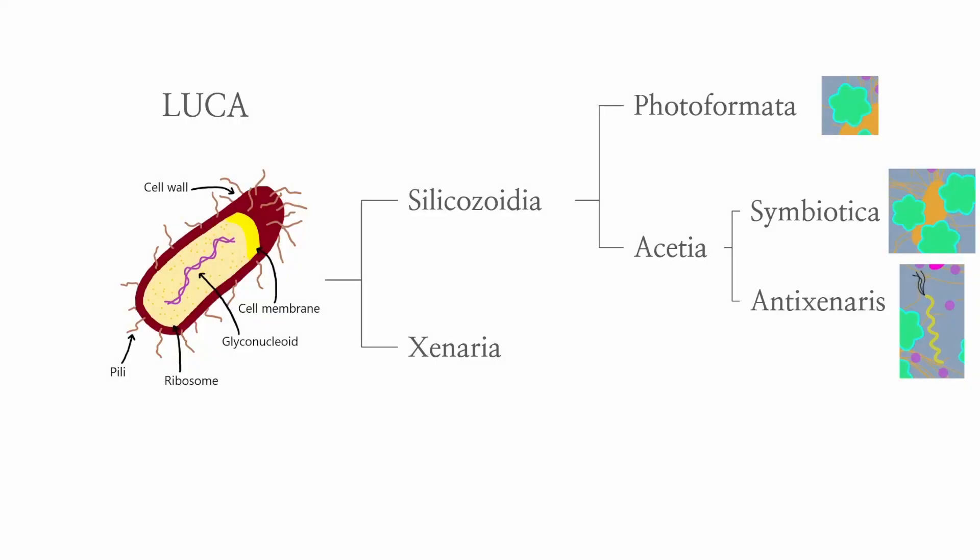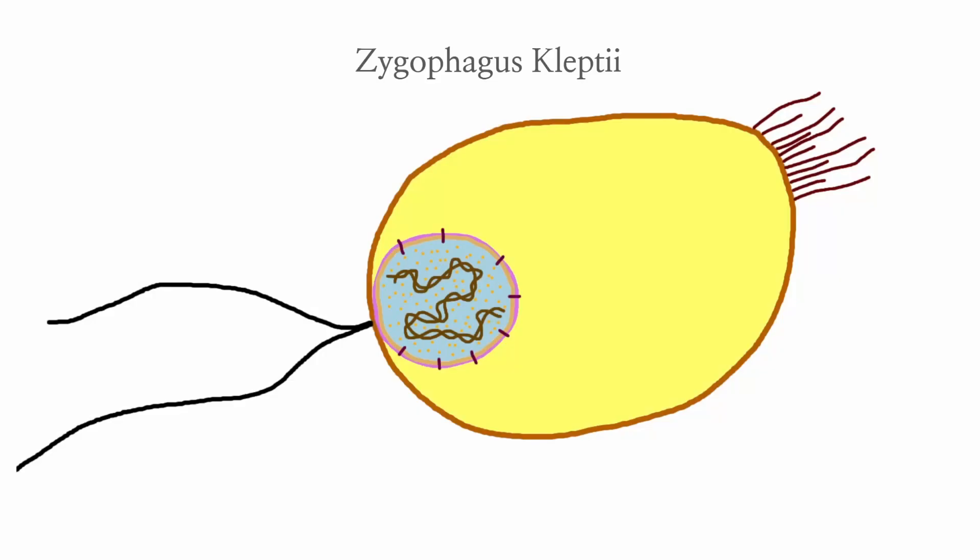So, after so much time discussing the silicozoid domain, it's time to turn our attention to one of the fiercest predators of the Triadic Sea and the reason for antizenares toxicity. This zanarian predator lives outside but in close proximity to the photoform colonies. It can't tolerate the high oxygen and toxic conditions within the colonies, so it relies on hit-and-run predatory tactics. This particular species is a fine representative of the lineage zygophagus.